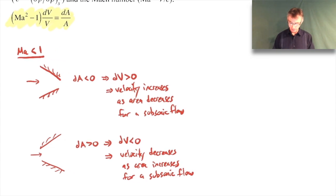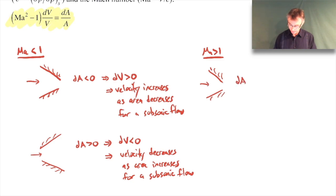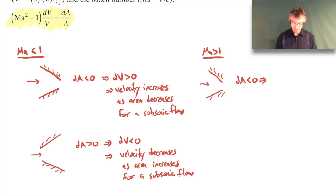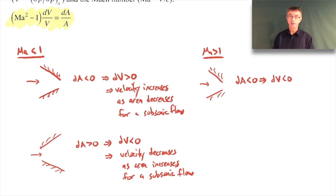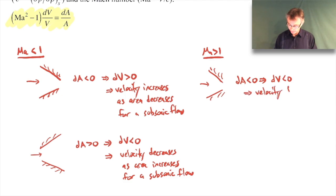Now let's consider what happens with a supersonic flow, where Mach number is greater than one. For the decreasing area case (dA < 0), the right-hand side is negative. But now (M² - 1) is positive because M > 1. So if the right-hand side is negative and this quantity is positive, dV must be negative - the velocity actually goes down. If you have a supersonic flow and decrease the area, velocity decreases. It's just the opposite of what happens for a subsonic flow.